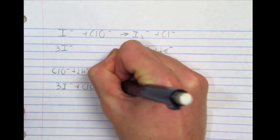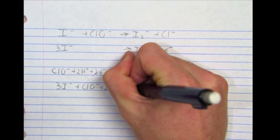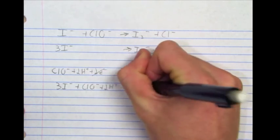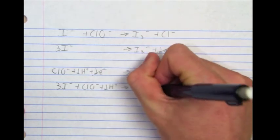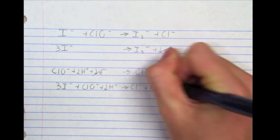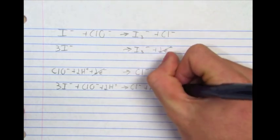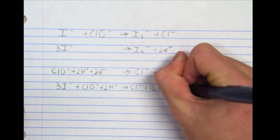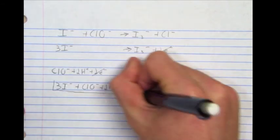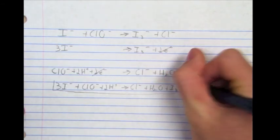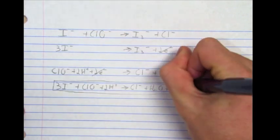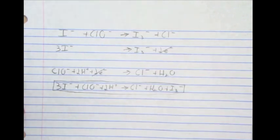Then you would combine the two half-reactions into a completed net ionic equation for a redox reaction. Thank you.